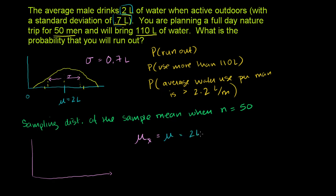So we're still centered at 2 liters. What's neat is that the sampling distribution of the sample mean — so you take 50 people, find their mean, plot the frequency, 50 people, find the mean — this is actually going to be a normal distribution regardless. This one just has a well-defined standard deviation and mean but isn't normal. Even though the population distribution isn't normal, the sampling distribution will be, as we've seen in multiple videos already.